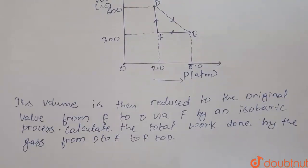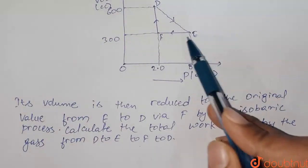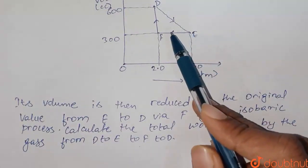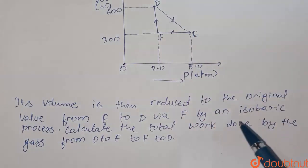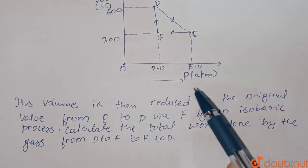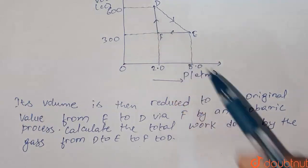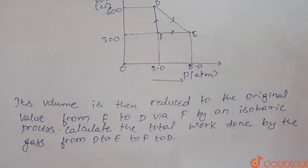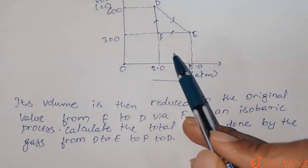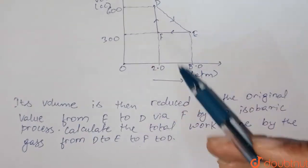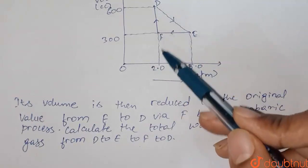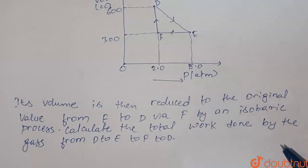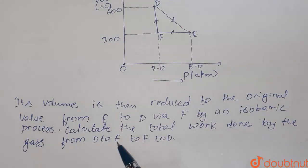Now, its volume is then reduced to original, that is from E to D via F by an isobaric process. If you consider F to D, this is an isobaric process where pressure is kept constant at 2 atmospheric pressure, and we have to calculate the total work done by the gas from D to E to F to D.